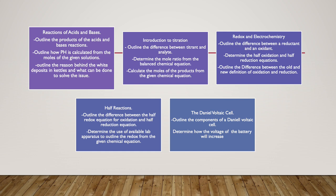On Wednesday, we will be going over half reactions. During that class we will be able to outline the difference between the half redox equation for oxidation and half redox equation for reduction. We will be able to determine the use of available lab apparatus to outline the redox from a given chemical equation. An important reaction will be the oxidation of a magnesium ribbon.